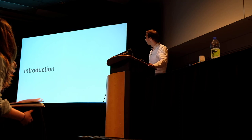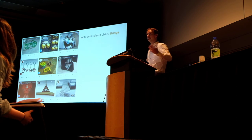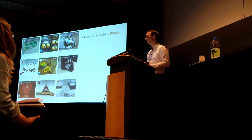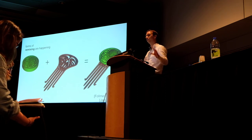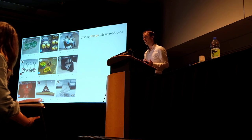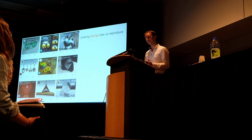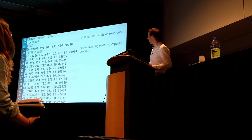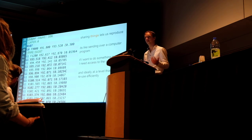Let's first have a look at the background of this work. For a long time people have started to share things on repositories like Thingiverse. At this point there are over a million models on Thingiverse, and some elementary forms of remixing have started to happen. People take the shape of one model and recombine it with another to make something new. But sharing only lets you reproduce the same models — it's a bit like getting a precompiled computer program. If you want to do more with it you need access to the original source code, and ideally at a library level for efficient reuse.